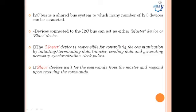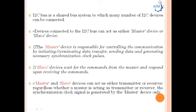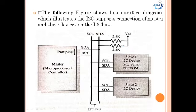The slave device waits for commands from the master and responds upon receiving them. Both master and slave devices can act as either transmitter or receiver. Regardless of whether a master is acting as transmitter or receiver, the synchronization clock signal is always generated by the master device only. I2C also supports multi-master configurations on the same bus.